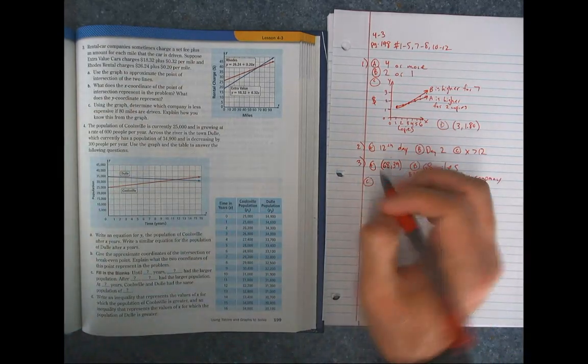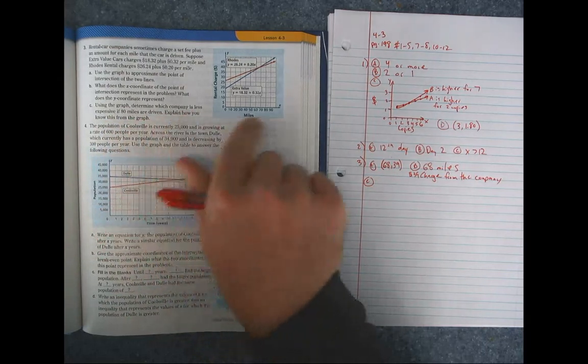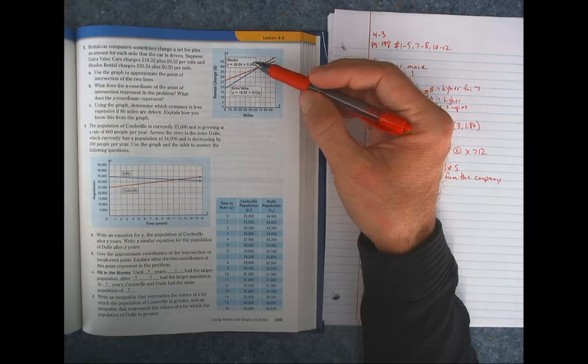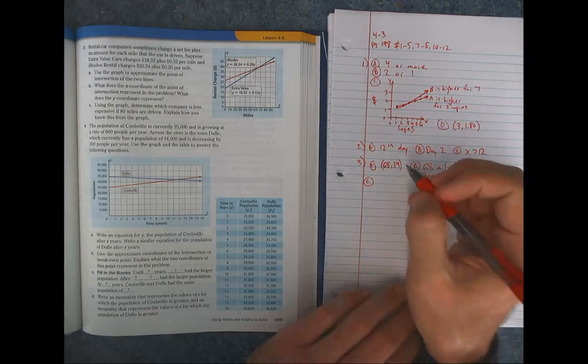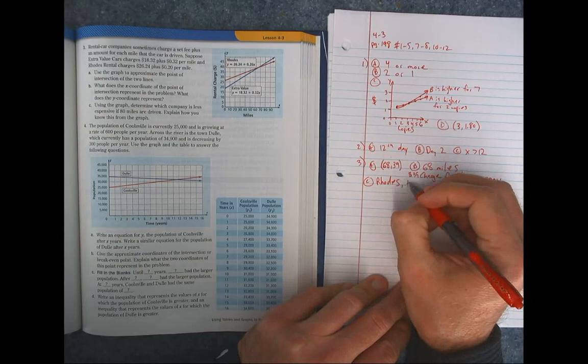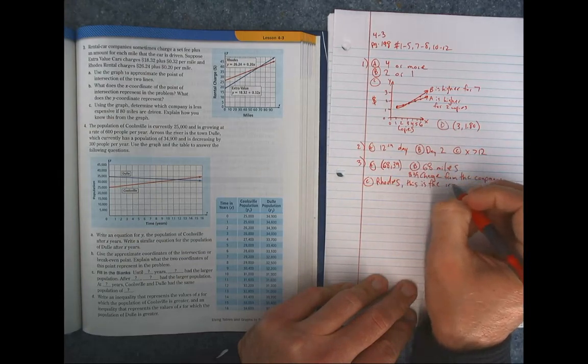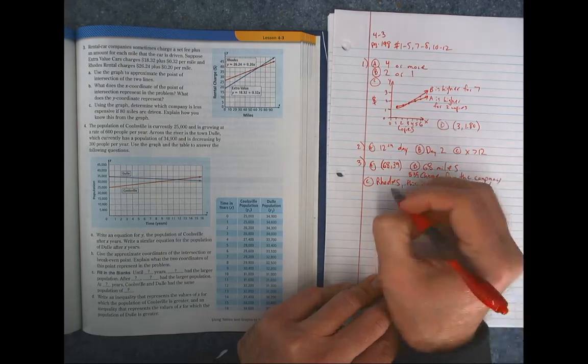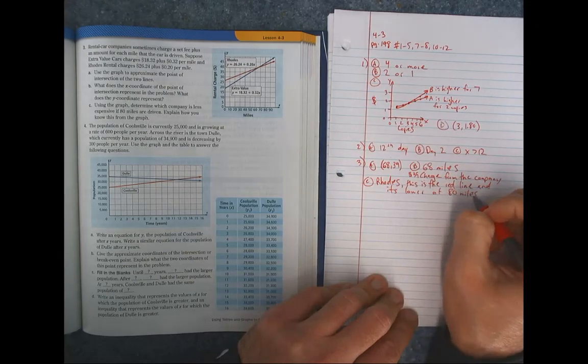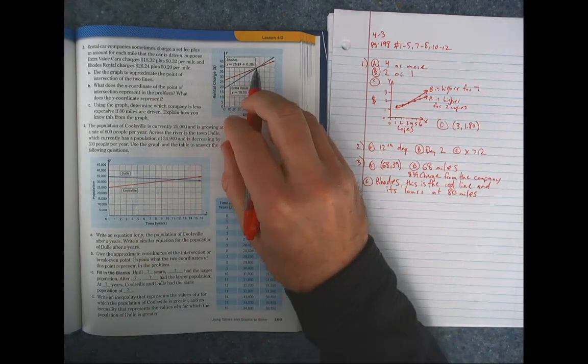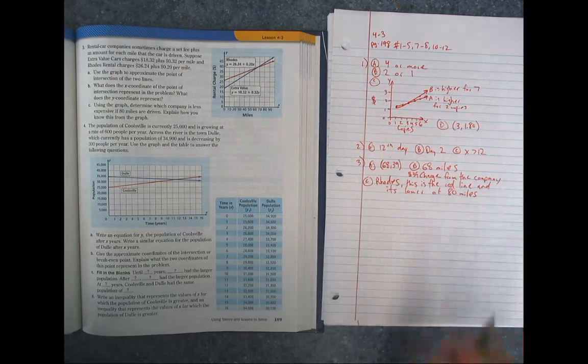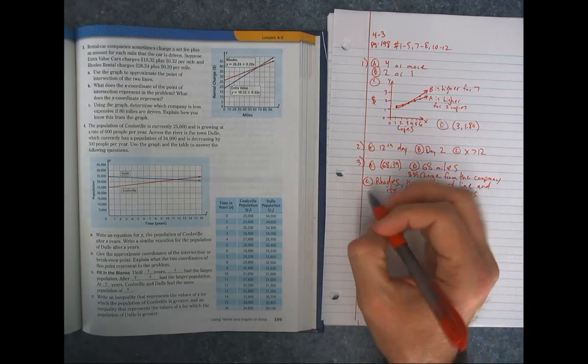Okay, letter C. We're going to use the graph to determine which company is less expensive if 80 miles are driven. So just looking at the graph real quick, here's 80 miles. Boom. The red one, which would be the roads, is going to be the one that's less expensive. It says explain why. So this is the red line. And it's lower at 80 miles. So this is the nice part about a graph. While it's not exact with that intersection, it's kind of hard to see. If you start getting up here and you're just calculating which one should I use, looking at the graph gives you a nice, quick indication of what's the better one.